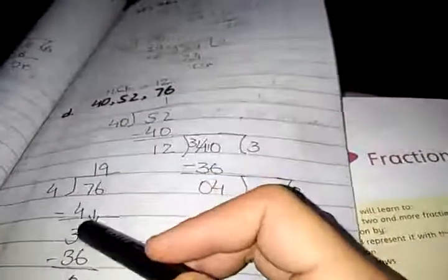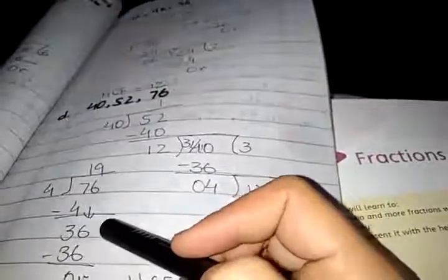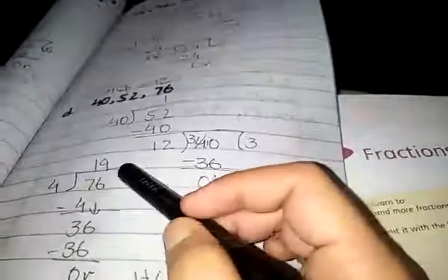Then we divide 4 on 76. 4 ones are 4, 7 minus 4 is 3. We take 6 as a dividend and now 36 is our dividend. 4 nines are 36. So 4 is the highest common factor of 40, 52, and 76.